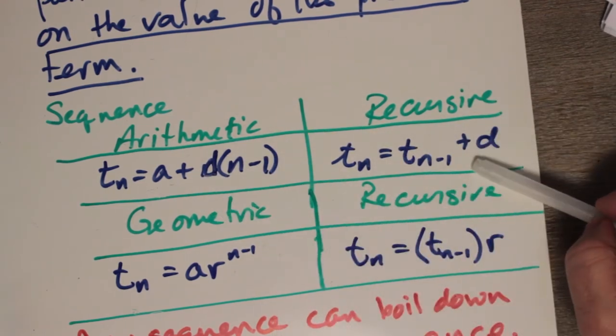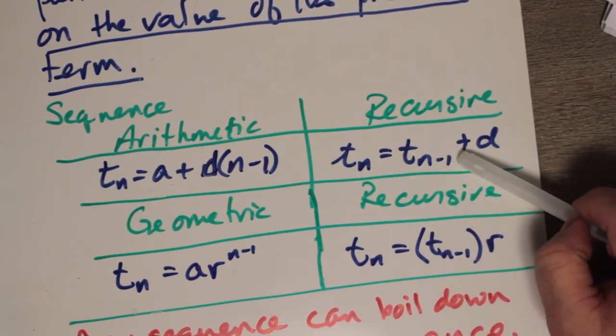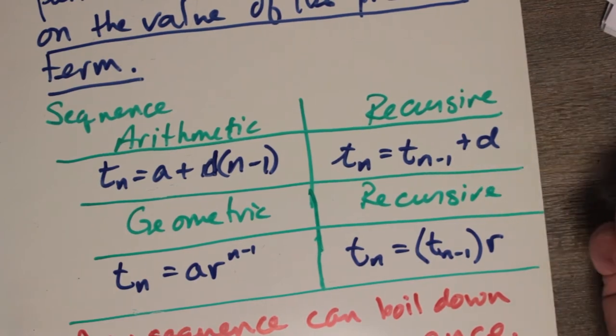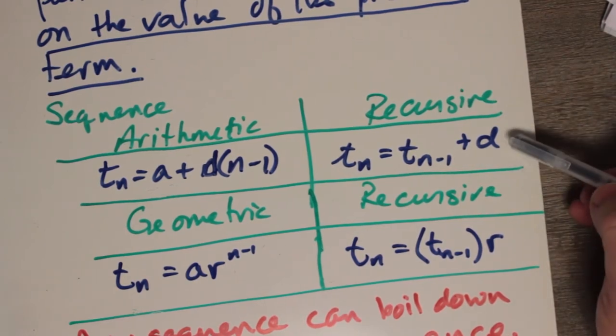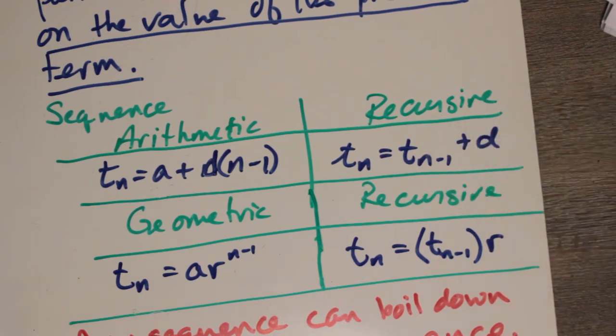For example, an arithmetic series, recall that every new term is really the old term plus some difference added to it. Therefore, the nth term equals the previous term, term n minus 1, plus some difference, and that's all you need.